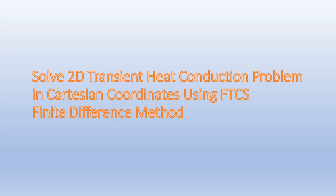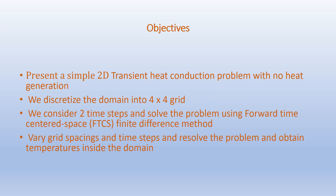In the previous videos we showed you how to solve a 2D steady state heat conduction problem in Cartesian coordinates using finite difference method. In this video we're going to solve a 2D transient heat conduction problem in Cartesian coordinates using FTCS or forward time centered space finite difference method. Our objectives are to present a simple 2D transient heat conduction problem with no heat generation, discretize the domain into a 4 by 4 grid, consider two time steps and solve the problem.